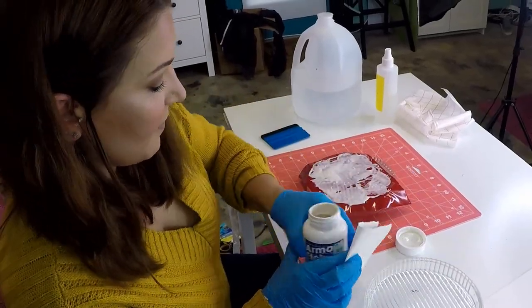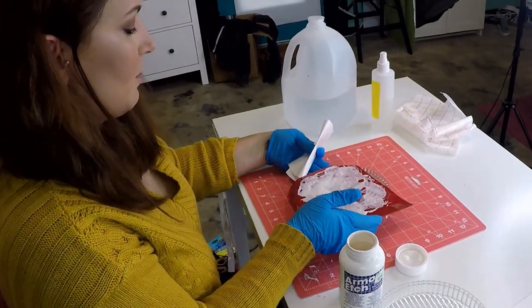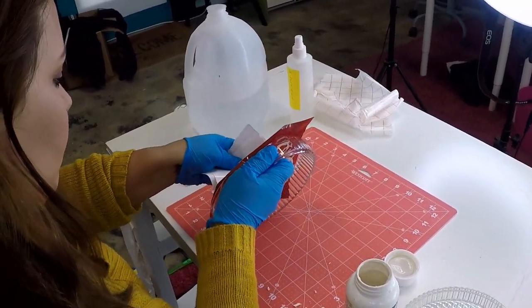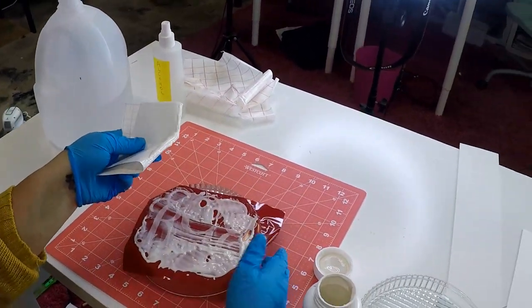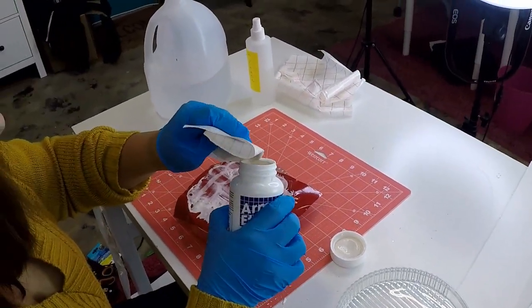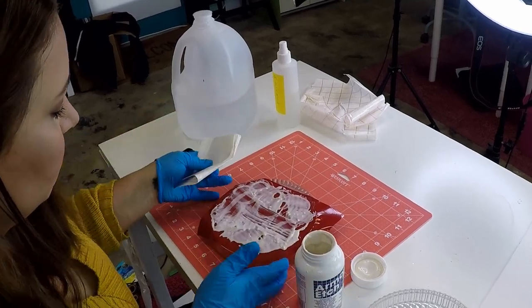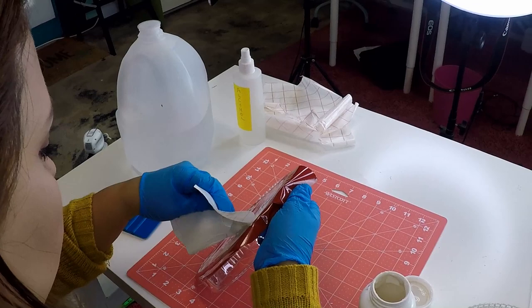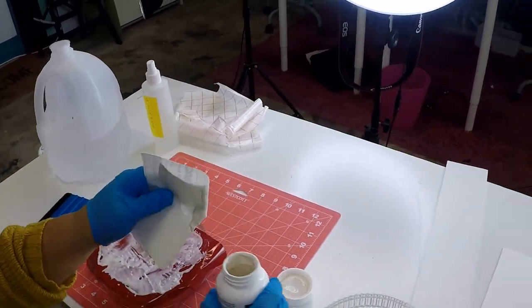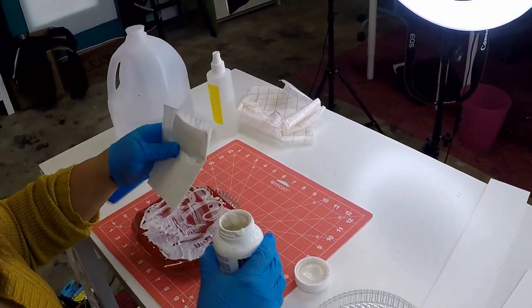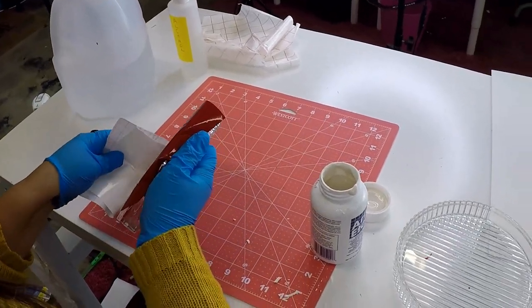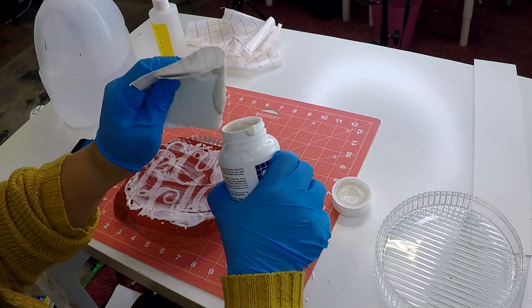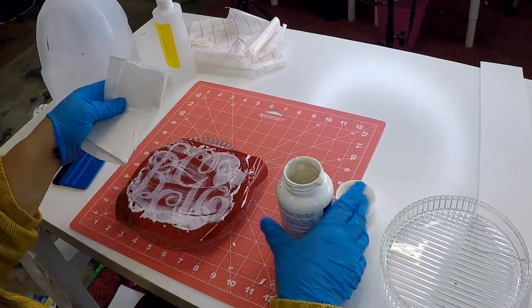This has been sitting for about 15 minutes. So what I'm going to do first is just take a piece of paper from the backing of the vinyl and scrape as much of this off as I can. And put it back in the container.